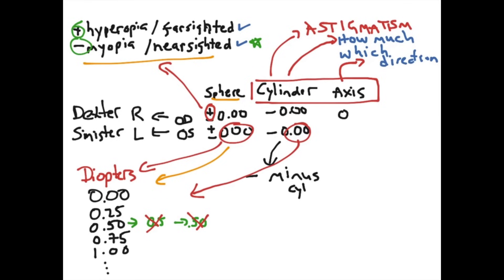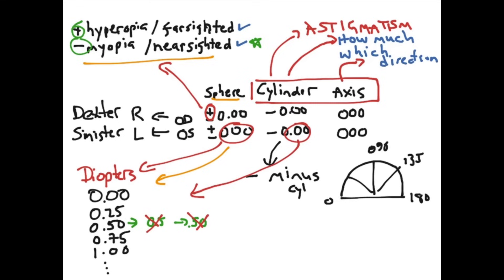The axis of the prescription refers to which direction the astigmatism is in, measured on a protractor in degrees. The value ranges from 001 up to 180 degrees, in 1-degree steps. We don't have a zero value because that is actually the same thing as 180 degrees. With axis, it's extremely important that you write out every digit in the value to avoid confusion — so there is no confusion.